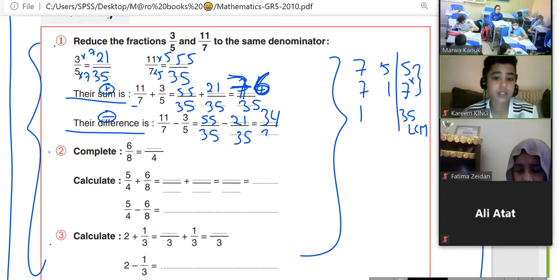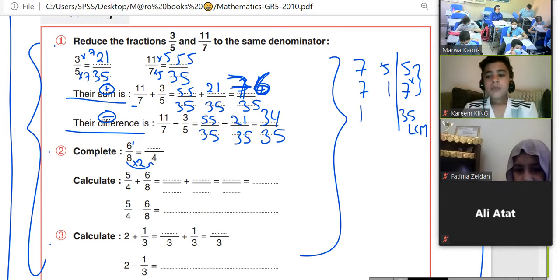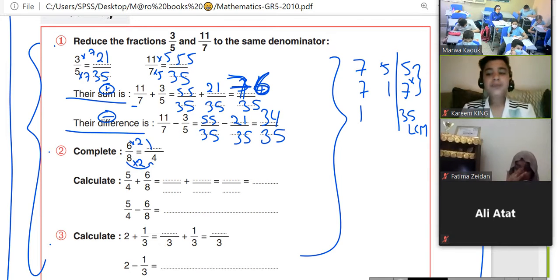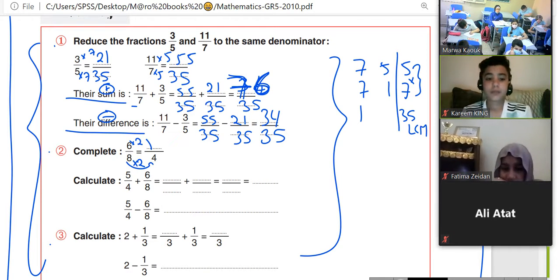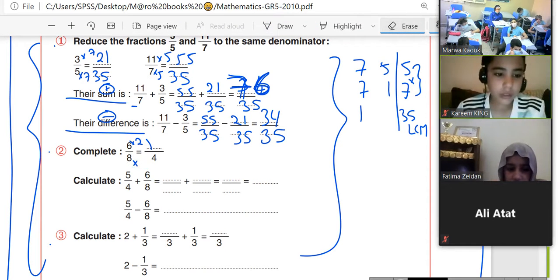34 over 35. Now the 8 becomes 4 when we are multiplying by 2 by 2 it will be 12. No, it becomes 4. I am not multiplying, what I am making is divide.